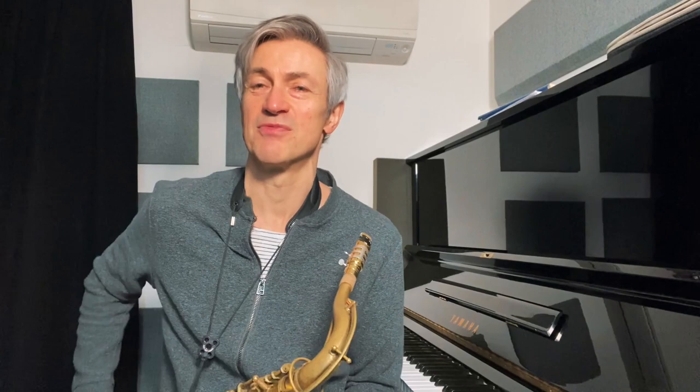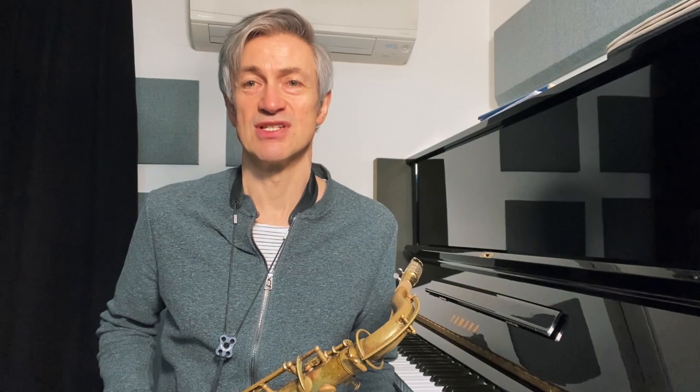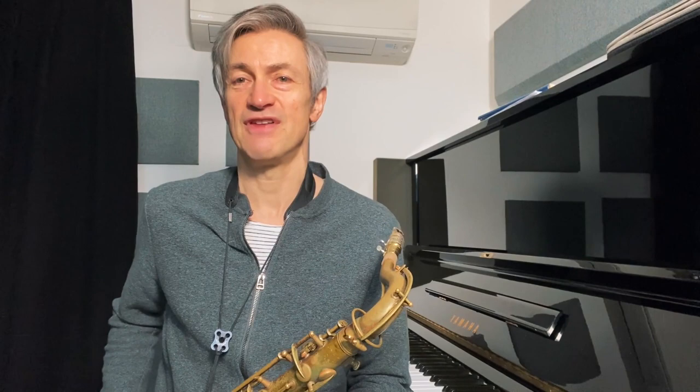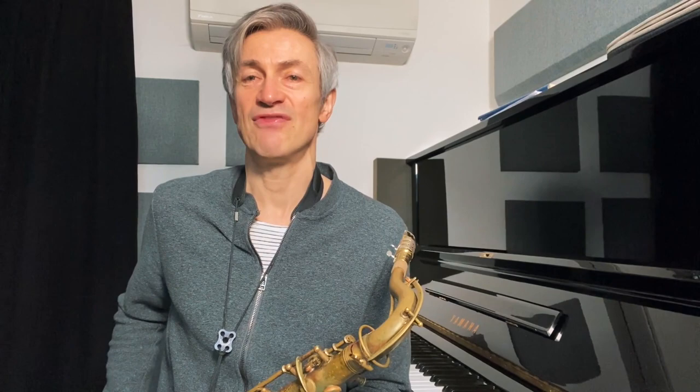Now we're going to build it up in the same way as we did before on the G7 chord. So we're going to take a G7 first of all, like this. Then we're going to play a chord built on the third, which is B, and this is going to give you a B diminished 7. Then we're going to take a chord and build it on the fifth, which is D, so we'll get a D half diminished. Then we're going to take a chord and build it on the seventh, which is F, and we're going to get an F minor 7 like this.